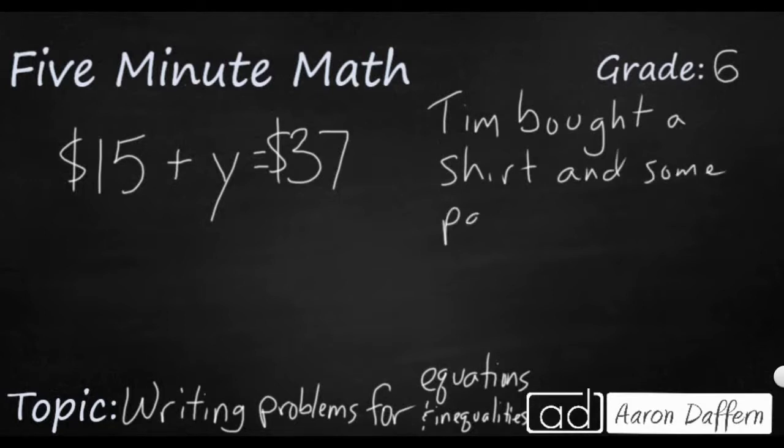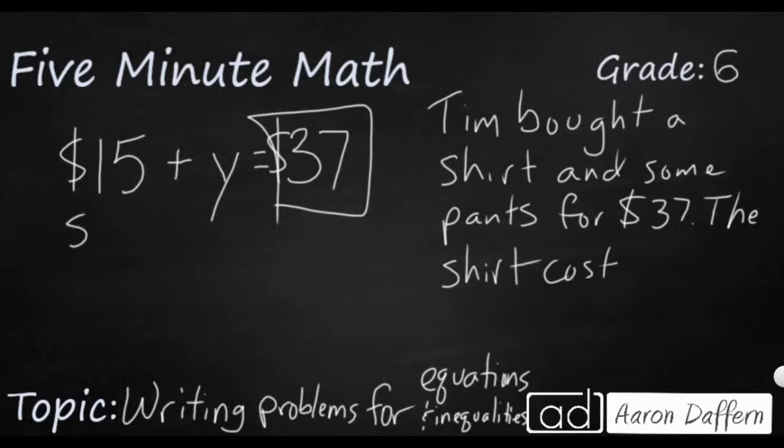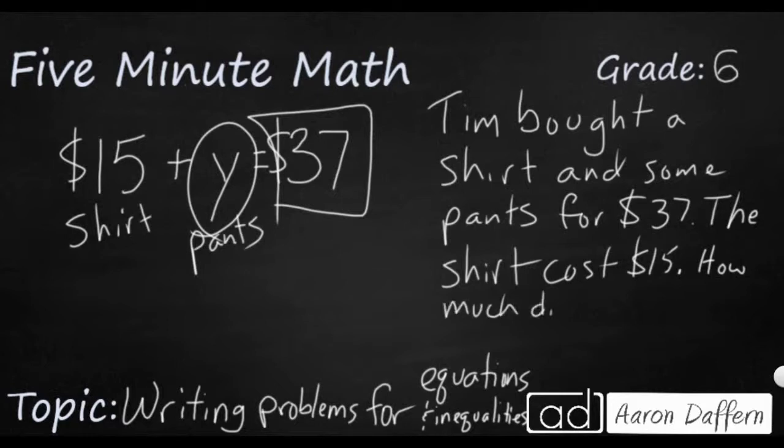And we'll say the total, so this is going to be our total over here, that's going to be $37. And we know one thing. So we'll say the shirt cost, and this is going to be our known quantity over here. So we'll make that our shirt, $15. And then our question is going to be how much, what's our unknown right there? Those are going to be our pants. How much did the pants cost?